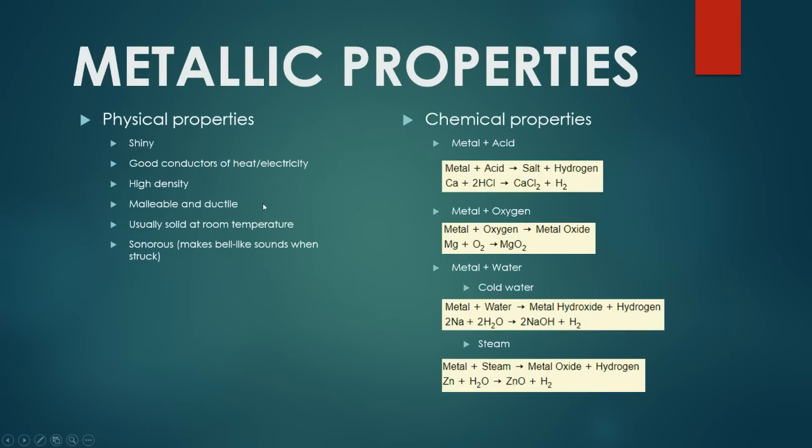The physical properties of metals are usually that they're quite shiny. They're really good conductors of heat and electricity. They're usually fairly high in density. They're malleable and ductile due to the nice lattice arrangement of the cations and the metallic structure, usually solid at room temperature, and they're sonorous, suggesting that they make bell-like sounds when struck.